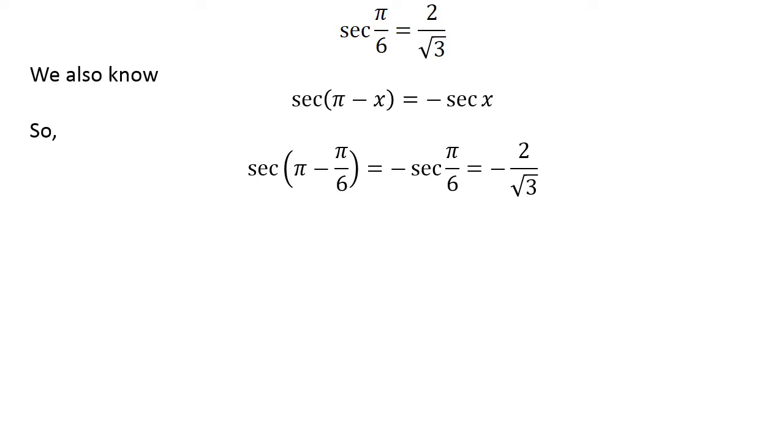So, secant of pi minus pi upon 6 is equal to minus secant of pi upon 6, which equals minus 2 upon square root of 3. As pi minus pi upon 6 equals 5 times pi upon 6, secant of 5 times pi upon 6 equals minus 2 upon square root of 3.